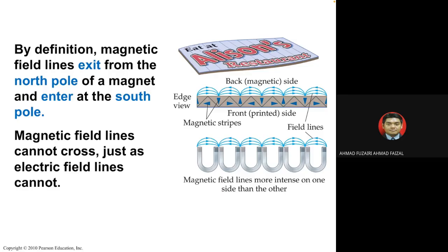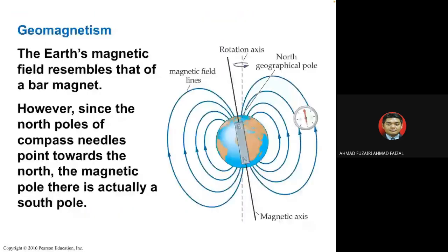Geomagnetism is about the difference between the north geographic pole and the north geographical pole. The south of the Earth is equivalent to the south of a magnet if we consider Earth as a magnet. When we look at a compass, it always points north.